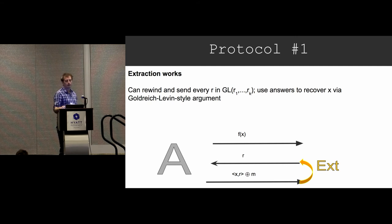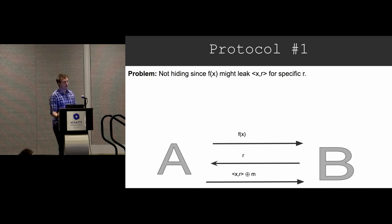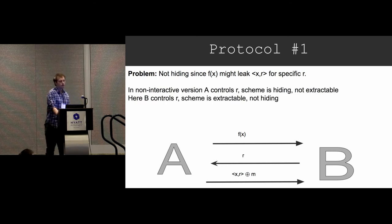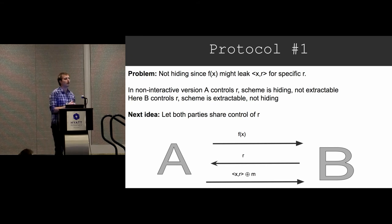This scheme has a working extraction proof. The rough idea is you rewind and send different challenges — specifically, different strings in the Goldreich-Levin set — and essentially run the Goldreich-Levin proof machinery to recover X. That's the extraction. However, the hiding proof doesn't work. The problem is that F(X) is just a one-way function, so it might leak a bit of X. If the adversary knows what bit it leaks, it can query that specific R and recover M. In the non-interactive version, Alice controls R and the scheme is hiding but not extractable. In this scheme, Bob controls R, so it's extractable but not hiding. The main idea is you need to somehow share the control of R between the two parties.